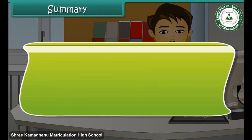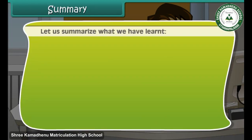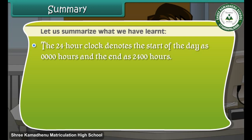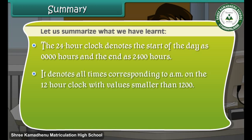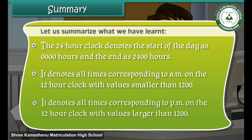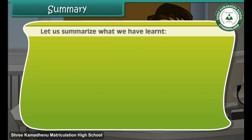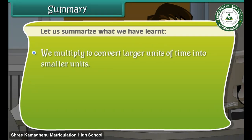Let us summarise what we have learnt. The 24-hour clock denotes the start of the day as 0000 hours and the end as 2400 hours. It denotes all times corresponding to a.m. on the 12-hour clock with values smaller than 1200, and all times corresponding to p.m. with values larger than 1200. We multiply to convert larger units of time into smaller units.